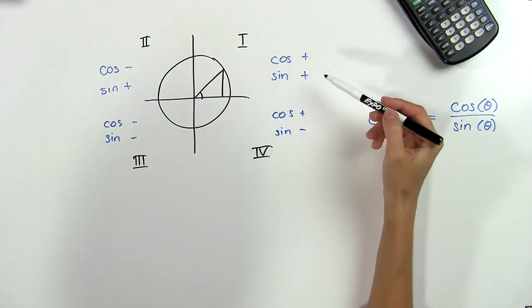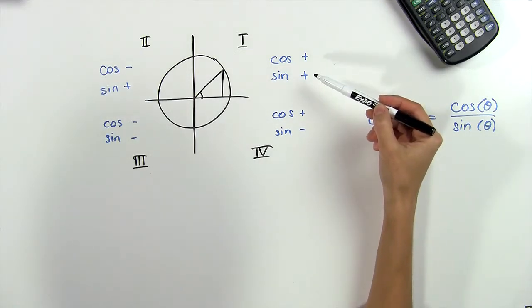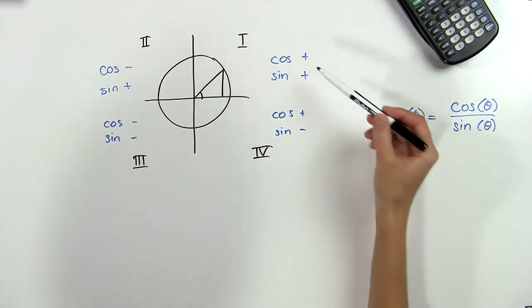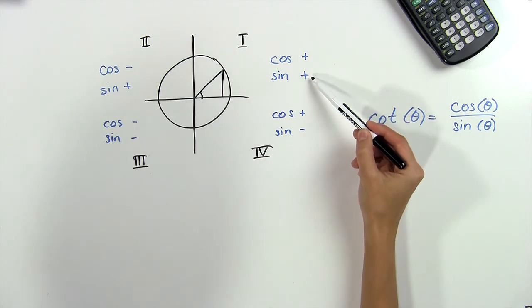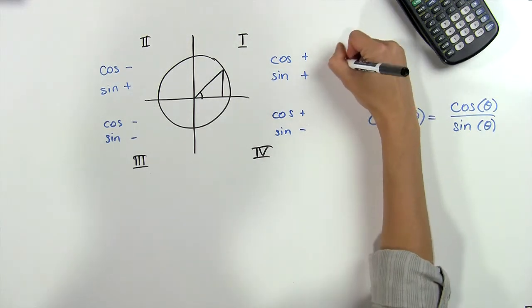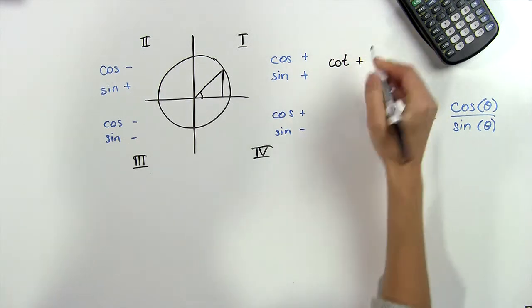Now that we've got this graph all figured out, let's use these signs to find the sign of the cotangent in each quadrant. In the first quadrant, we found that both cosine and sine are positive. Since cotangent is equal to cosine over sine, we have a positive number divided by a positive number, which is always positive. So the cotangent is positive in the first quadrant.